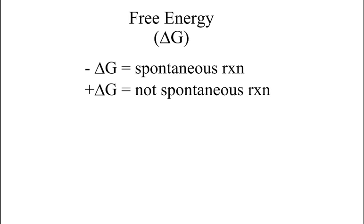If you have a negative Delta G, that means the reaction is spontaneous — it will proceed of its own accord. Whereas if you have a positive Delta G, it means that it is not spontaneous.